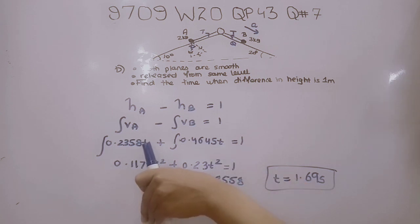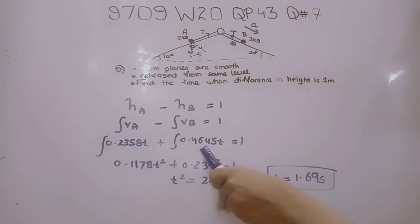Dividing by 2, we get 0.1178T squared plus 0.2323T squared equals 1. Adding these gives T squared equals 2.8558.